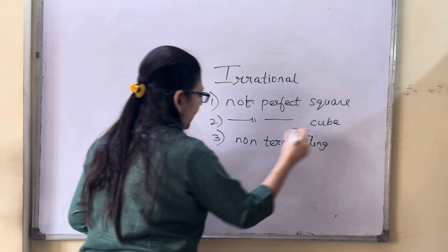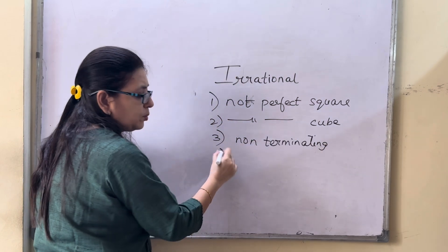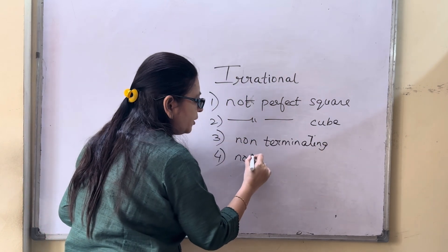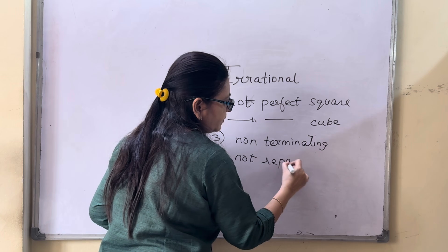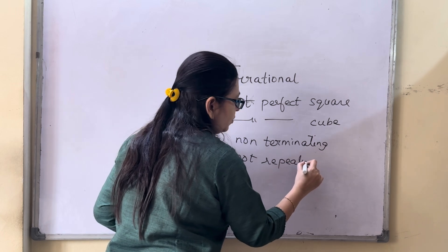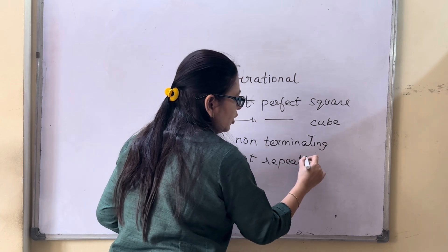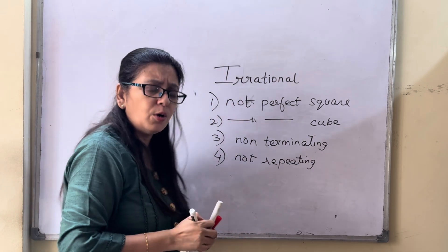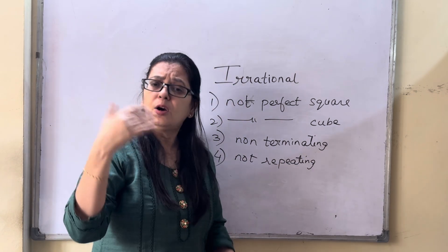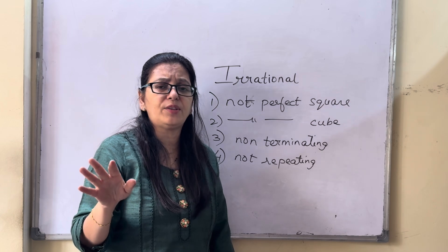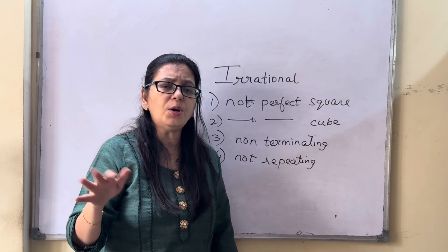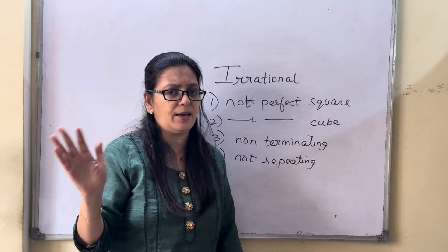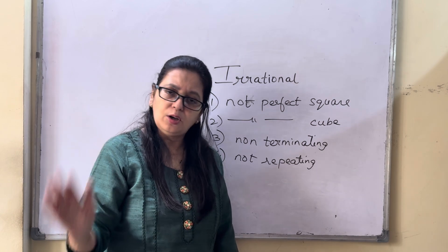And the last property is they are not repeating decimals — they do not repeat. So all non-recurring, all non-terminating, all non-perfect square, not perfect cube — they are all irrational numbers.